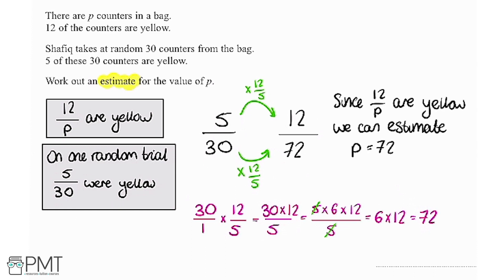So I'm just saying up here that since 12 over p are yellow we can estimate that p is 72. So we get one mark essentially for our working. Working out that we can take this 5 over 30 and transform it into 12 over something gets one mark. Then we get a final mark if we've done that all correctly and worked out that we can estimate that p is 72.